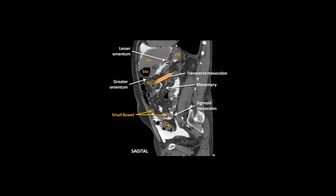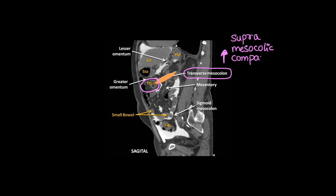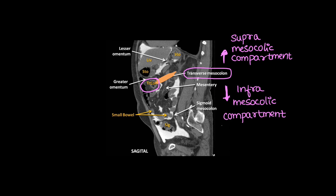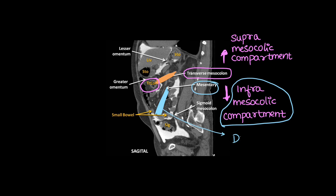The sigmoid colon is visible with the sigmoid mesocolon attaching it to the posterior wall. The transverse mesocolon divides the peritoneal cavity into the supramesocolic compartment above the mesocolon and the inframesocolic compartment below the mesocolon. The small bowel mesentery further divides the inframesocolic compartment into right and left halves.